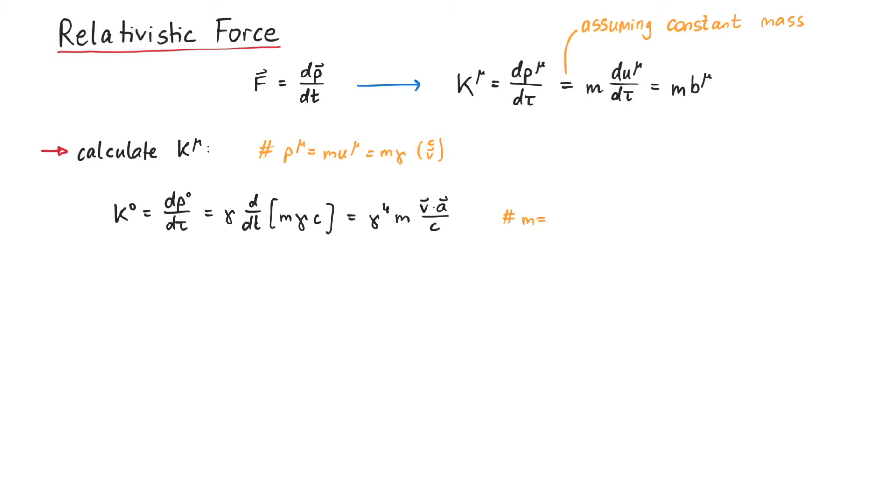This k0 is connected to power, but this will be discussed in a separate video. For the spatial components of k mu, we also write the derivative with respect to tau as gamma times the derivative with respect to time.